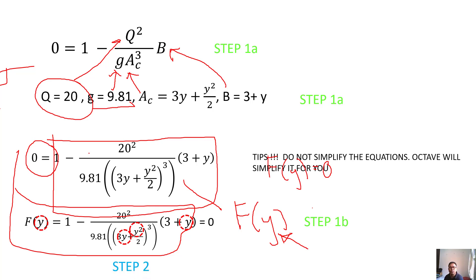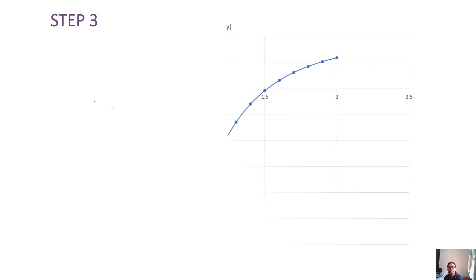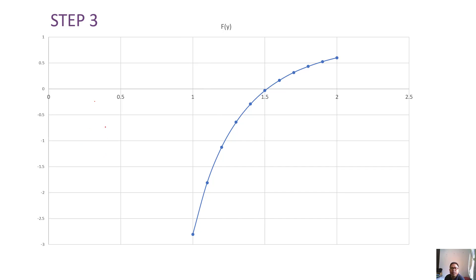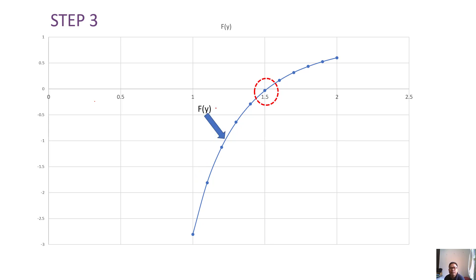That is step two. Step three: identify the lower guess value yl and upper guess value yu. When you multiply f(yu) by f(yl), the answer should be less than zero. To help with this, it is advisable to use Microsoft Excel to plot the graph of f(y), plotting from a certain value of y — here I'm using y from 0 to 2.